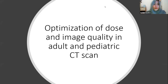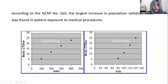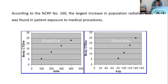Assalamualaikum warahmatullahi wabarakatuh. Good morning, sir and all my friends here. My name is Nazelya Zara, and today I will tell you about my research topic on optimization of dose and image quality in adult and pediatric CT scans. According to NCRP Report 160, the largest increase in population radiation dose was found in patient exposure to medical procedures. Radiation dose increases with higher CT image quality due to the use of higher voltage and/or electric current.